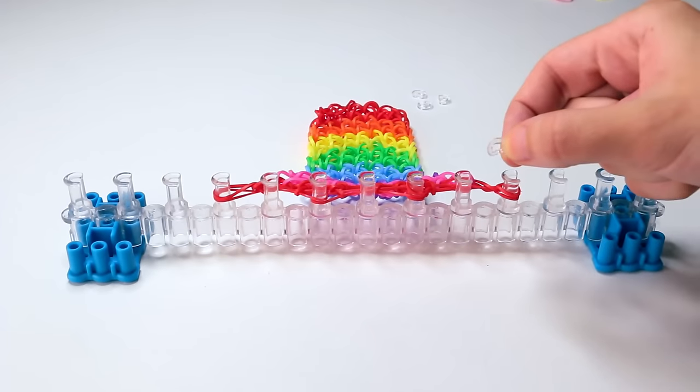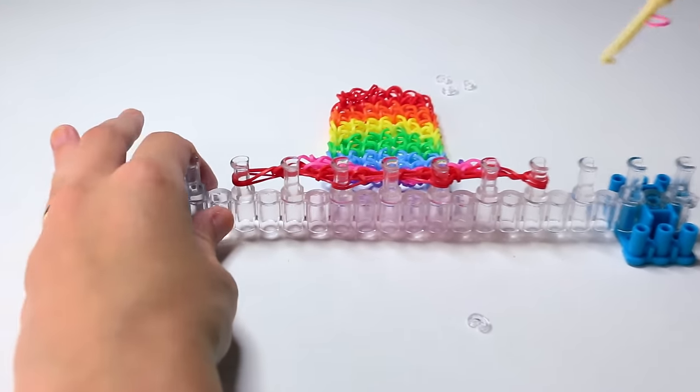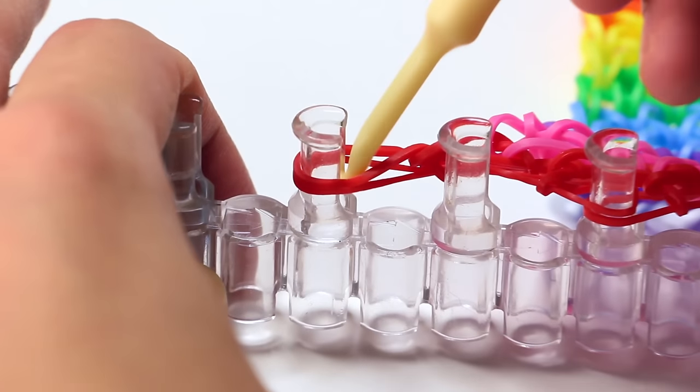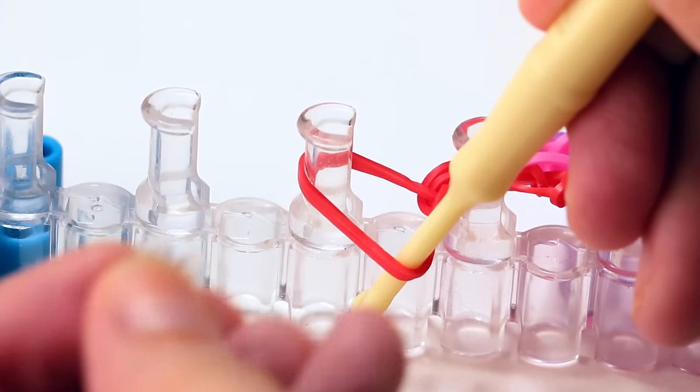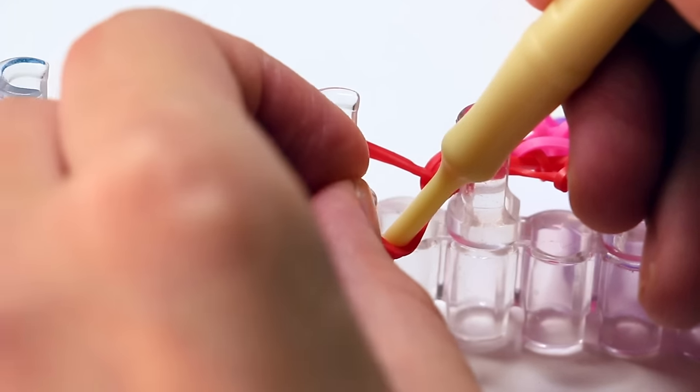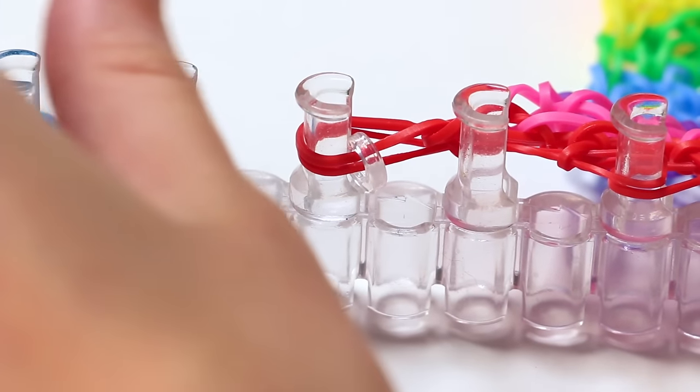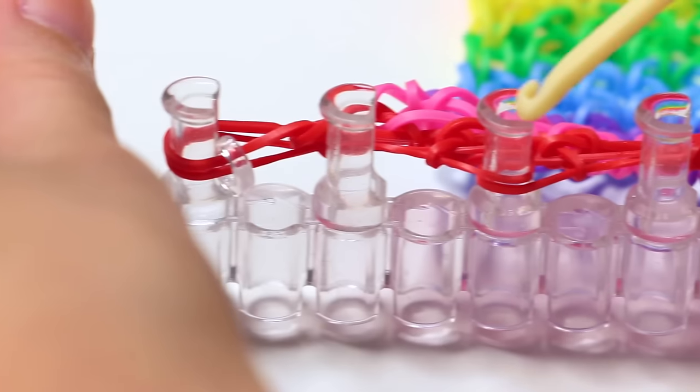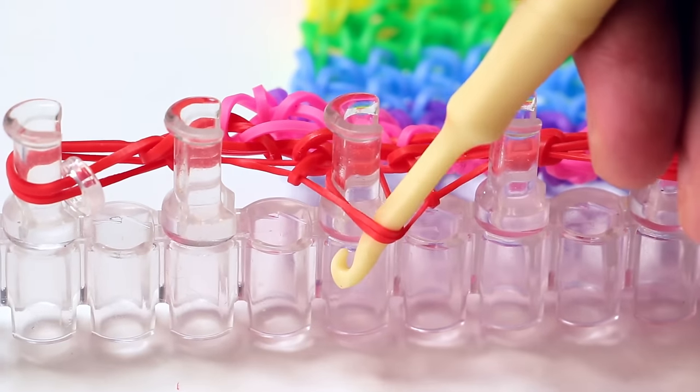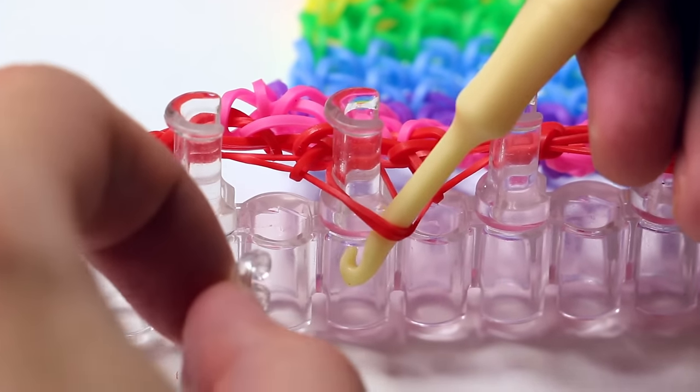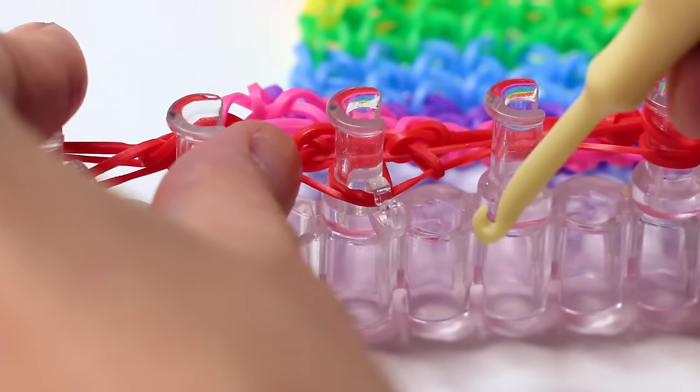It is still not safe to take the bracelet off of the loom. It will fall apart. First we need to add C or S clips. Grab your clip and grab your hook so you can stretch out the bands. That way it's easier to add your clip. Here you can see I have a C clip. Again it's okay to use an S clip. Push the opening of your clip onto the band and then it's attached. Now I'm going to add clips to the next pins that have bands on them. Make sure your clip covers all of the bands that are on the same pin. This is very important.